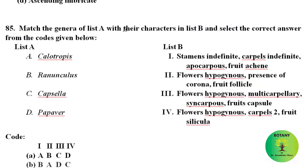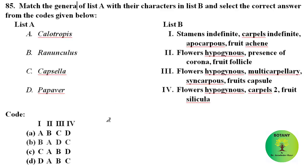Match the genera in list A with their characters in list B. Stamens indefinite, carpels indefinite, apocarpous, fruit achene — this is Ranunculus. Flowers hypogynous, presence of corona, fruit follicle — this is Calotropis. Flowers hypogynous, multicarpellary syncarpous, fruit capsule — this is Papaver. Flowers hypogynous, carpels 2, fruit siliqua — this is Capsella. The correct option is option B.